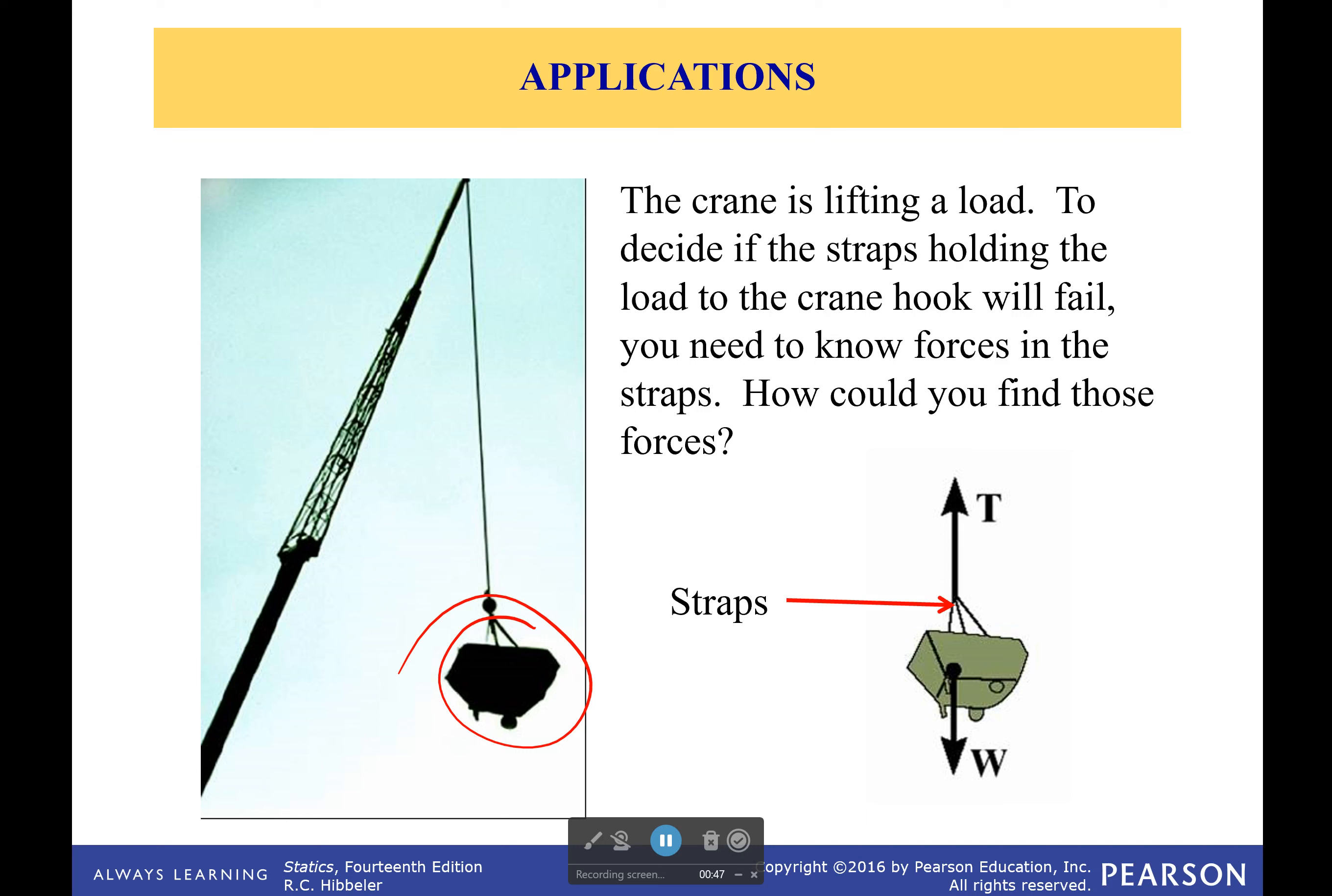Now, intuitively we're probably guessing the hook has to be able to hold the weight. So if the hook can hold that amount of weight, it should be fine. And you'd be correct. There is some force that the hook is applying up to hold it, and it has to be equal to the weight. Now, that's a free-body diagram right there. You just did that kind of instinctively. However, we need to find a more procedural approach to making a free-body diagram.